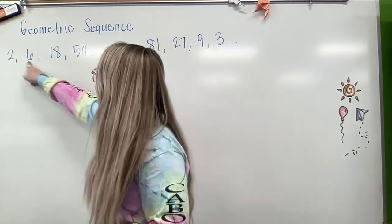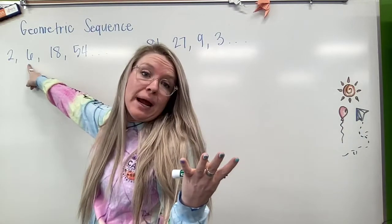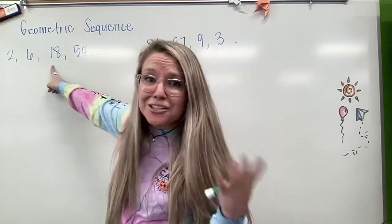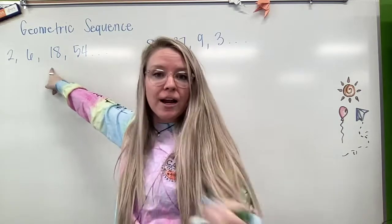So this first one, I'm going from 2 to 6, that's adding 4, right? But 6 to 18, that is not adding 4. So it's clearly not arithmetic.